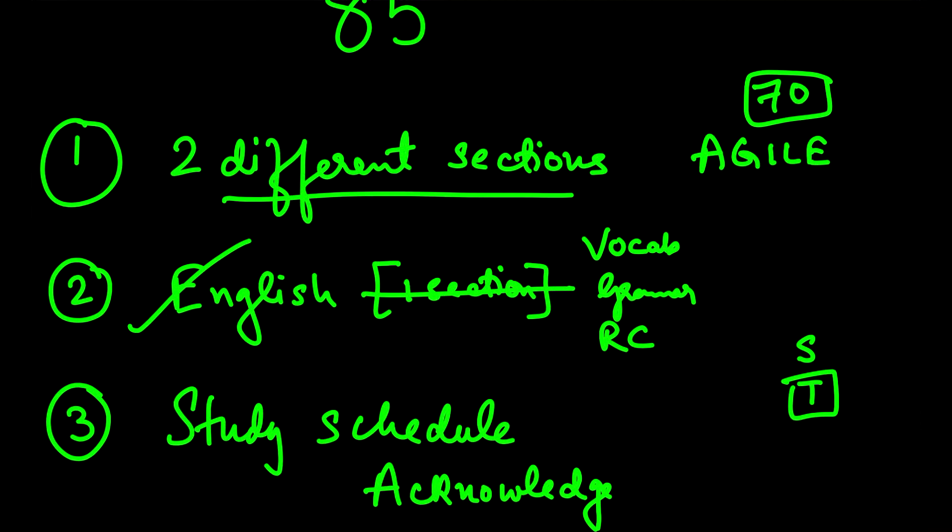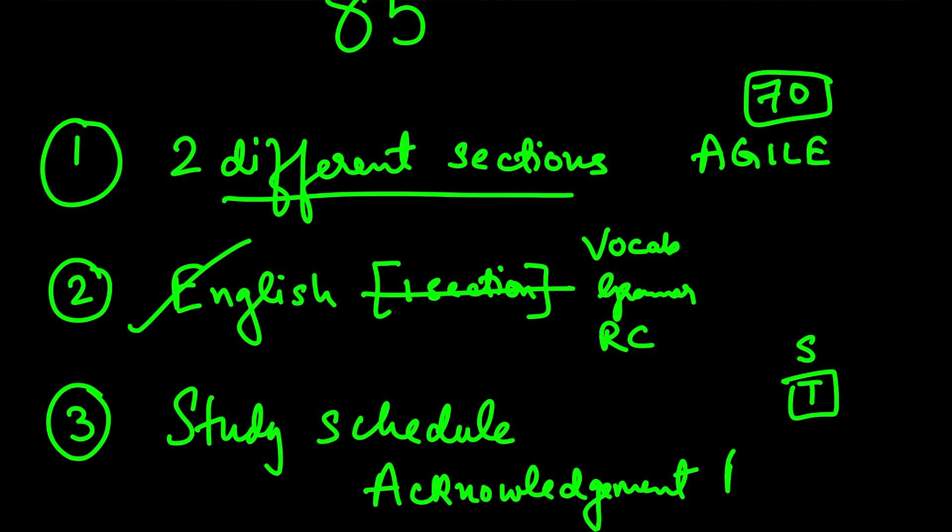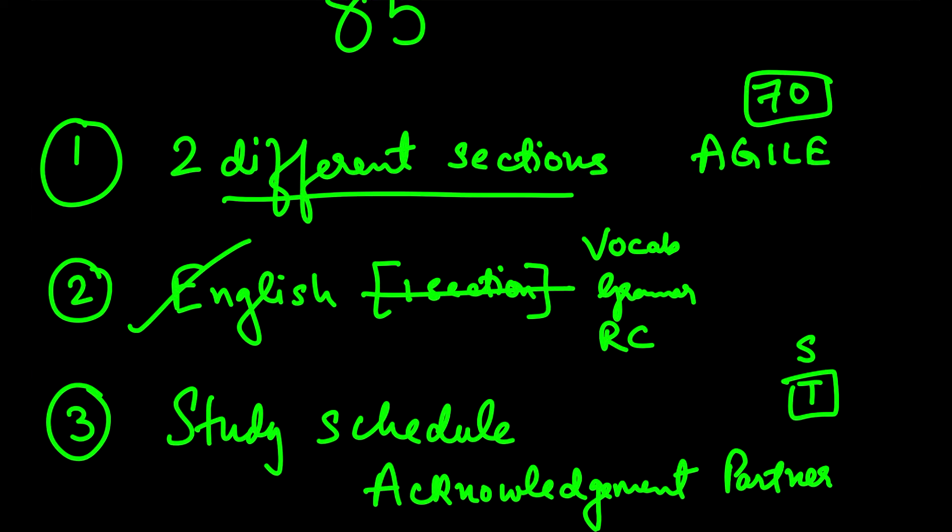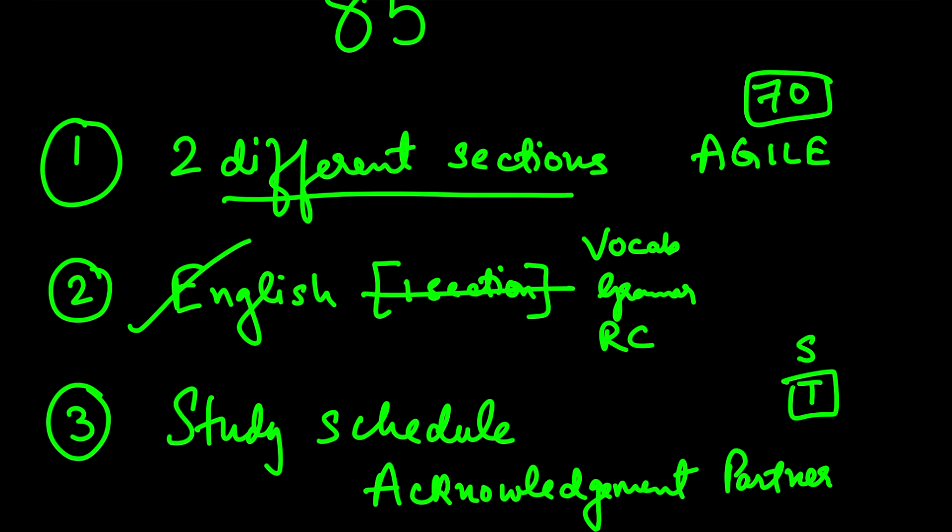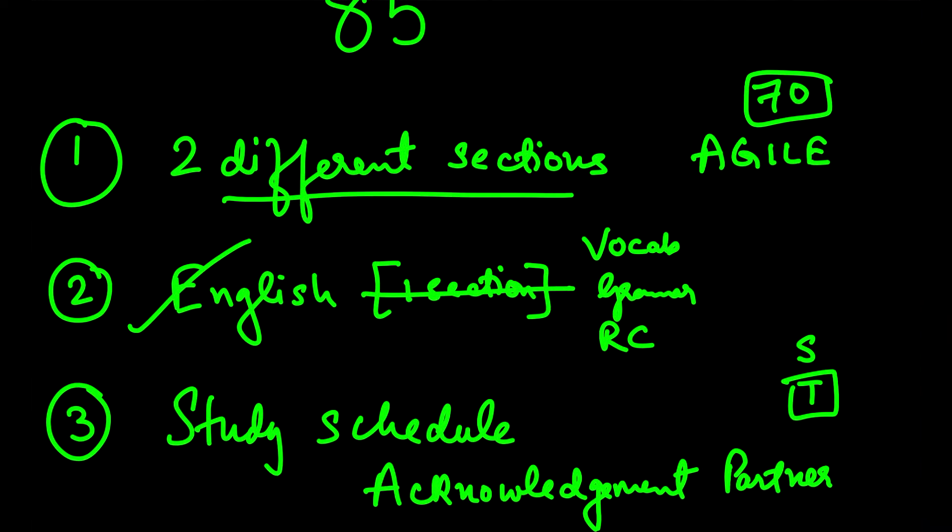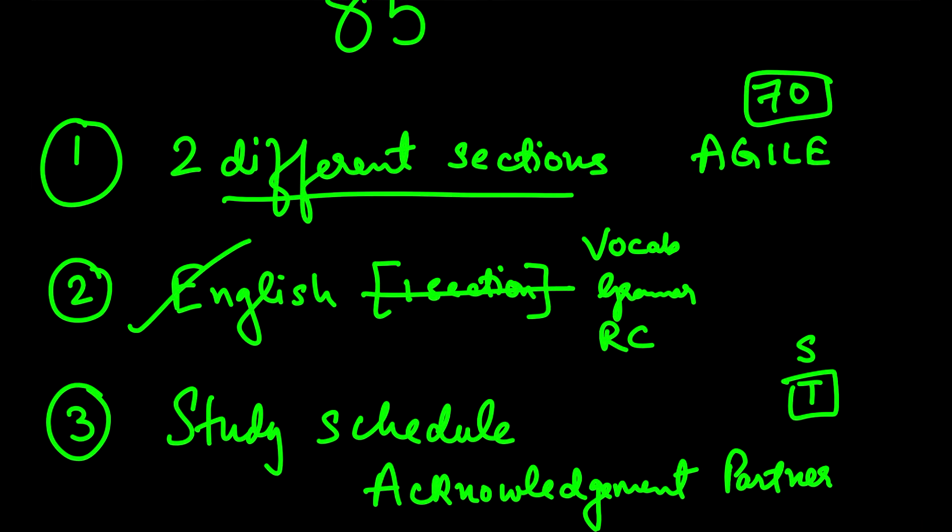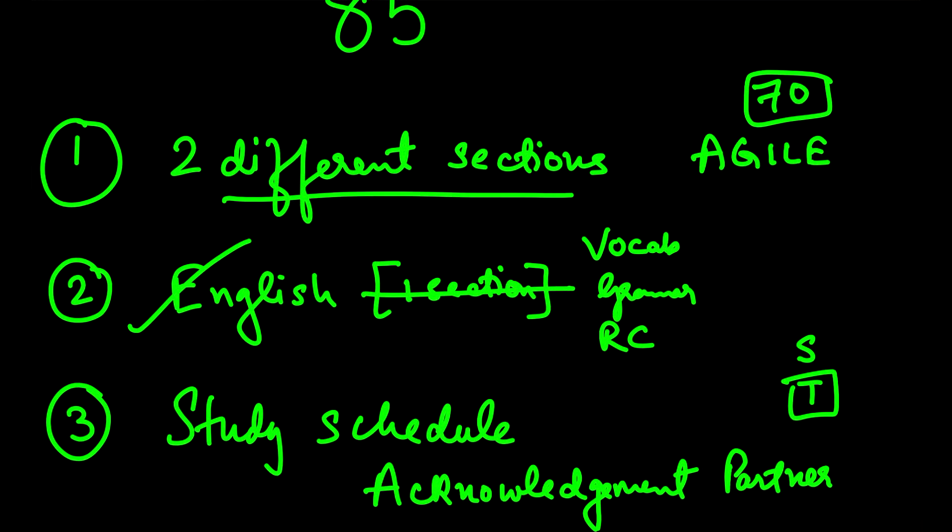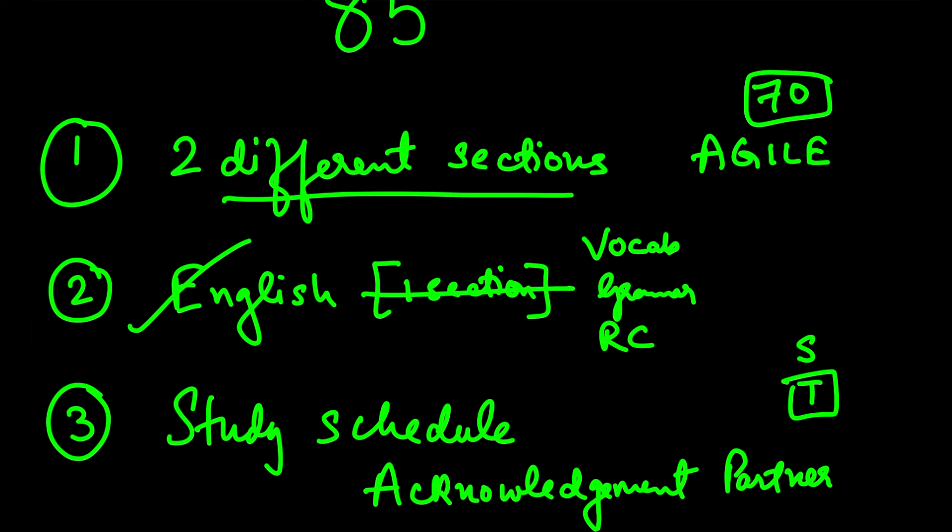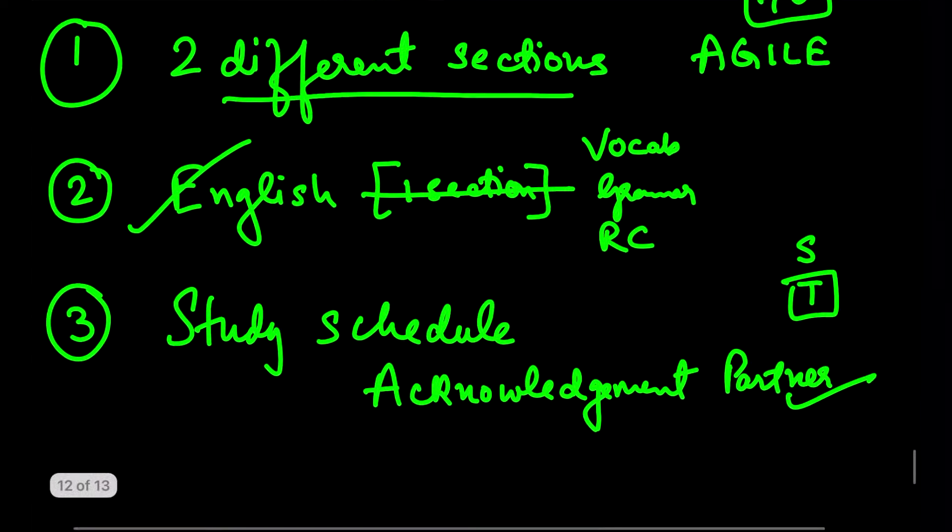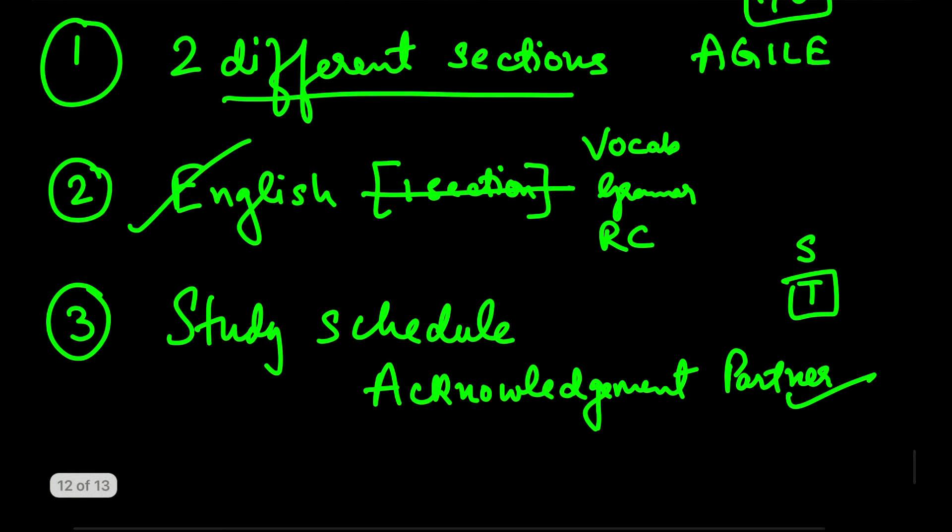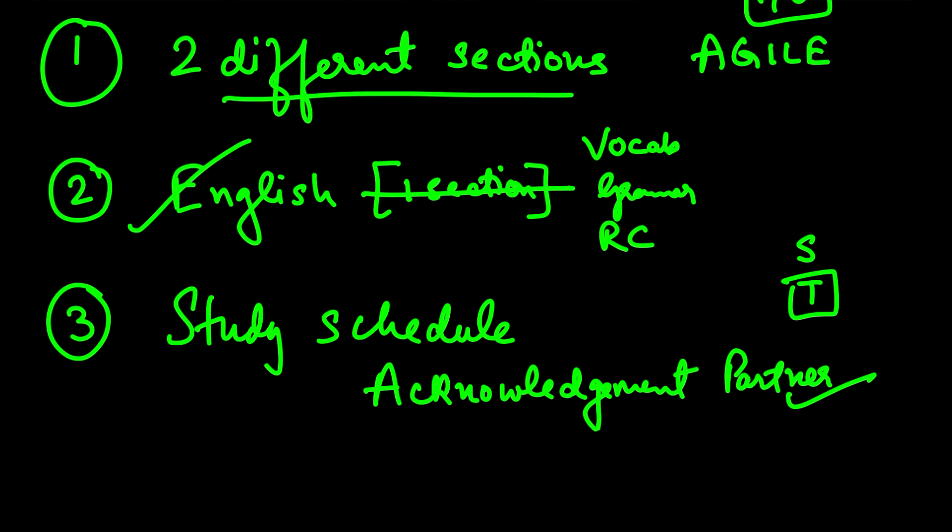I have talked about this in my previous videos, that acknowledgement partner and study schedule have a very good relation. What I want to say here is that if today you decide that you will read two RCs and solve two DILR sets, you have to tell this to someone, or at the end of the day when you complete your work, you have to tell someone that today I did this. I thought I would make three but I could only make two. Telling your acknowledgement partner is very important because many people develop a phenomenon where we become demotivated after not being able to fulfill our to-do list for two, three days regularly.